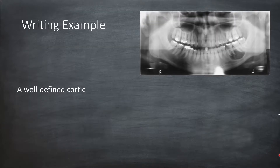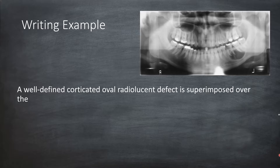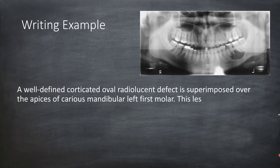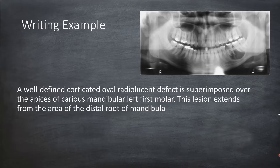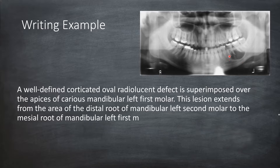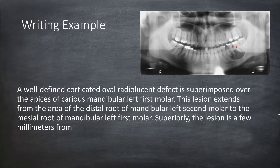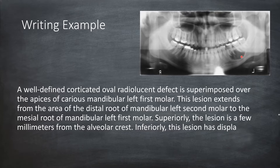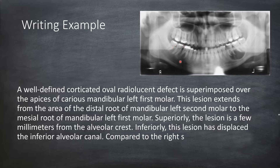A well-defined corticated oval radiolucent defect is superimposed over the apices of carious mandibular left first molar. This lesion extends from the area of the distal root of mandibular left second molar to the mesial root of the mandibular left first molar. Superiorly, the lesion is a few millimeters from the alveolar crest. Inferiorly, the lesion has displaced the inferior alveolar canal.